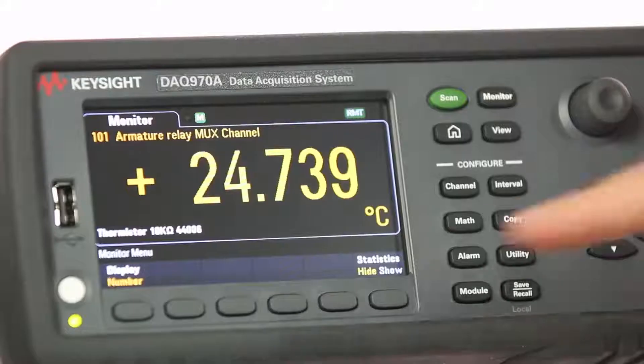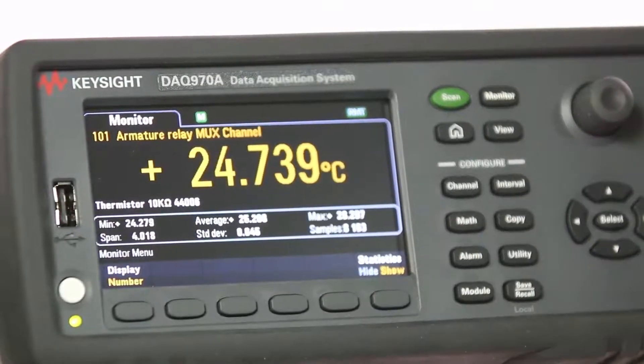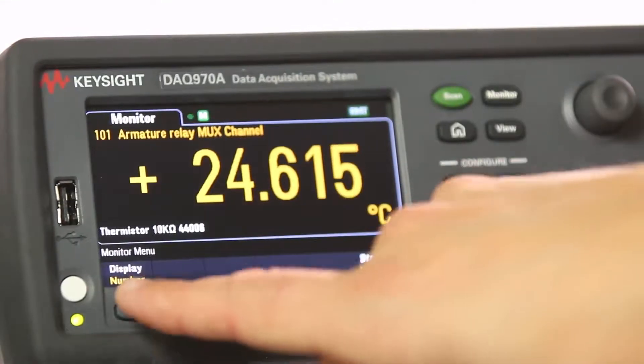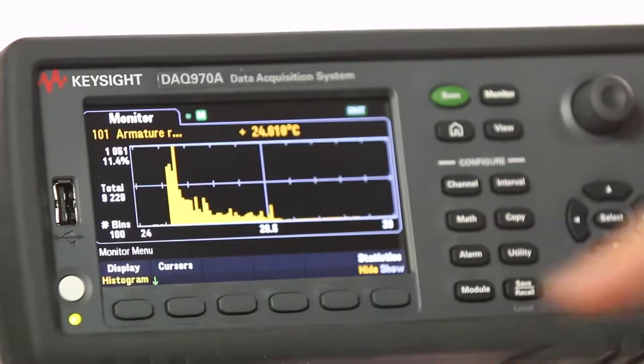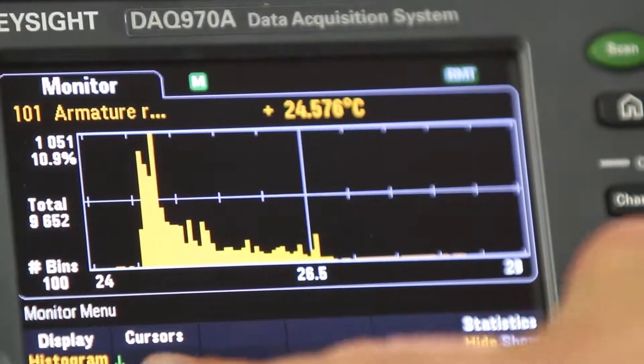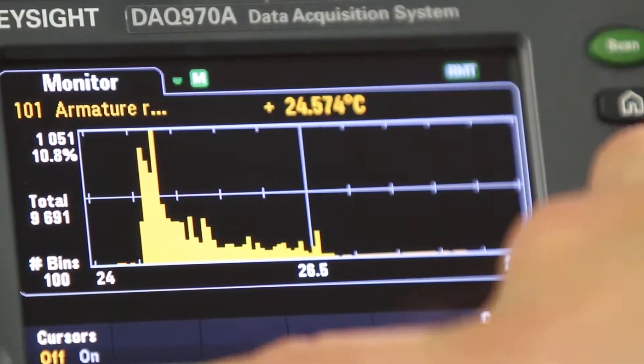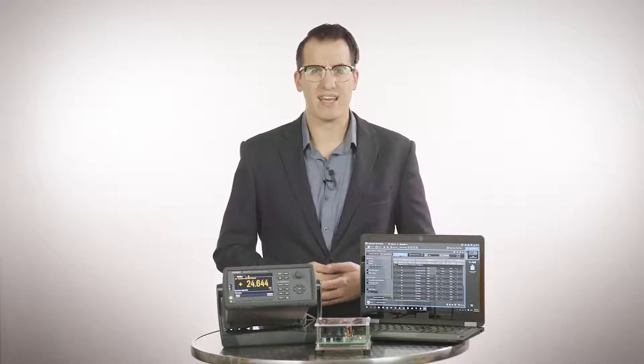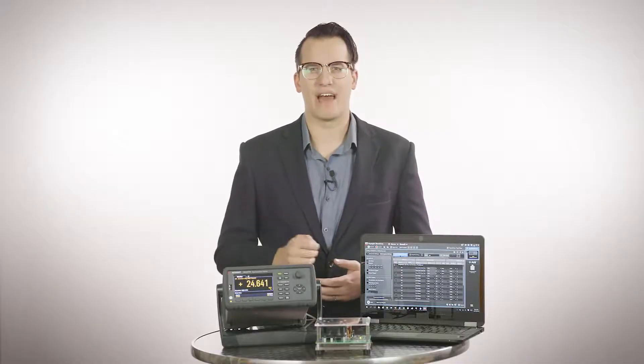It also has expanded measurement types and ranges. On top of the 11 measurement types that the previous generation could measure, the DAC 970A can measure diodes and capacitors. And it can measure very low current ranges, one microamp DC and a hundred microamps AC, and it has a higher resistance range of a thousand megaohms. The DAC 970A also has up to a 90% better accuracy for voltage, current, and resistance measurements.